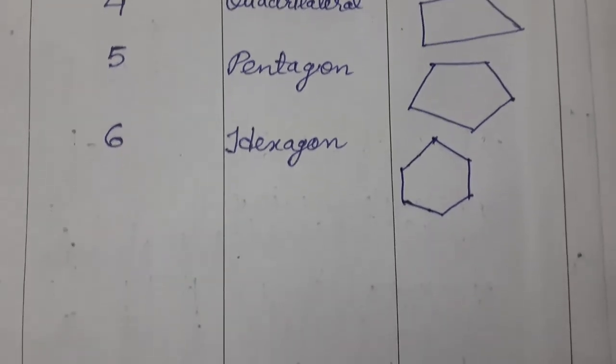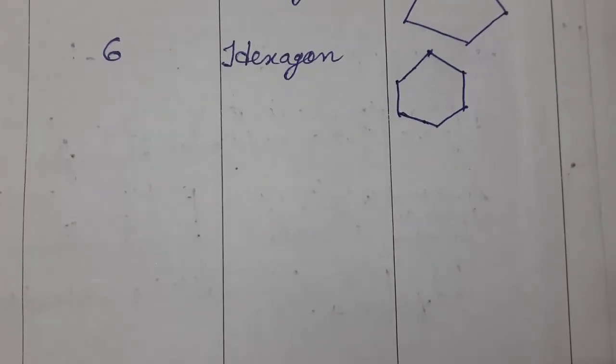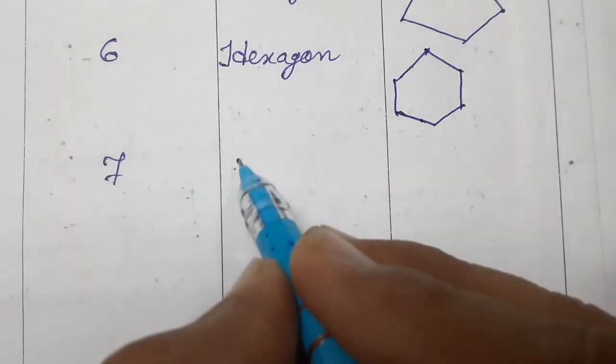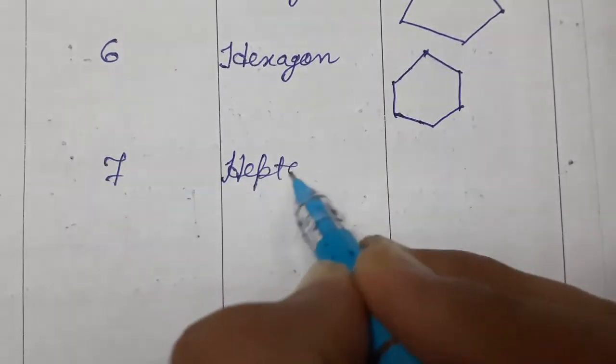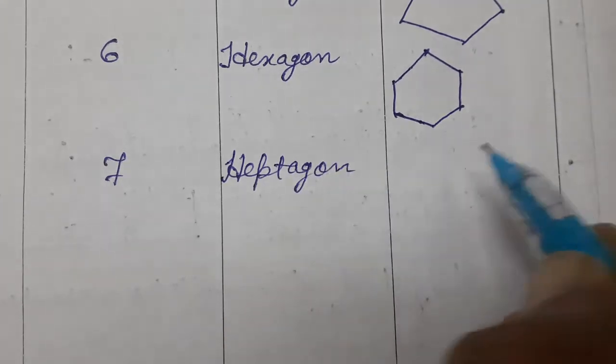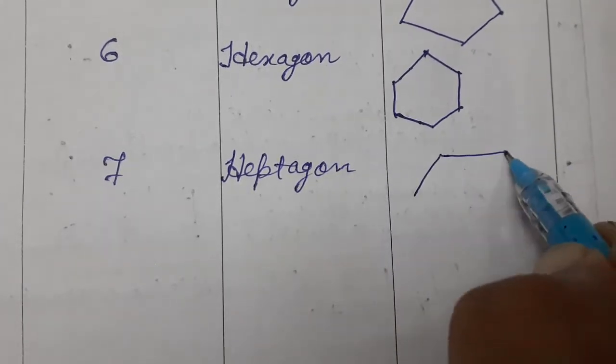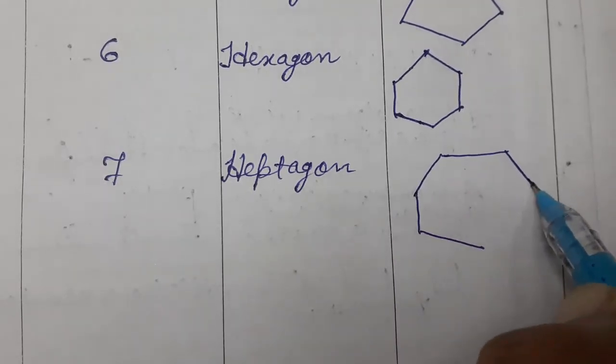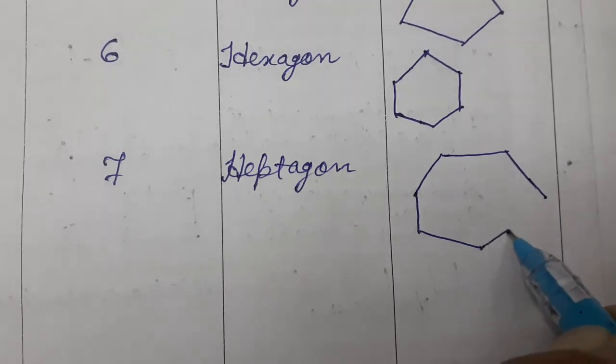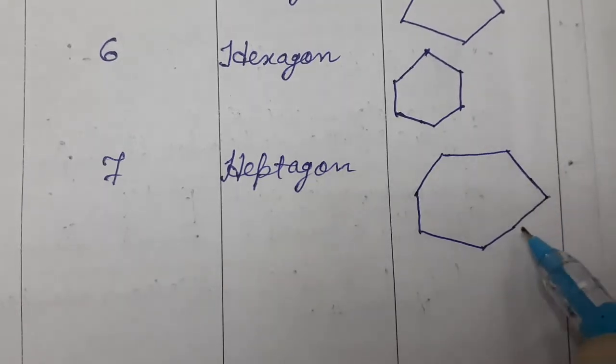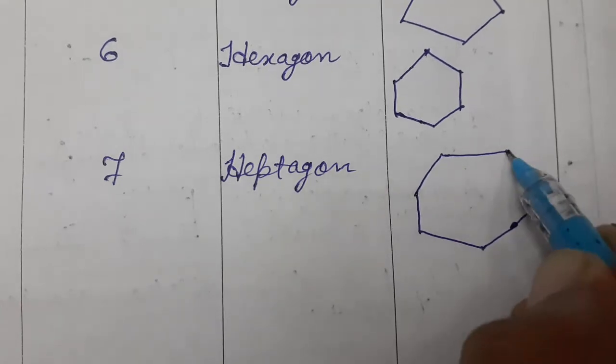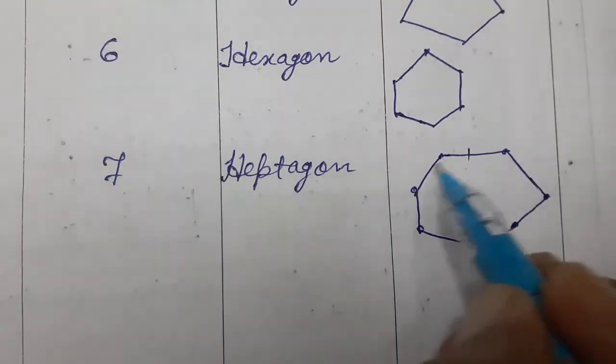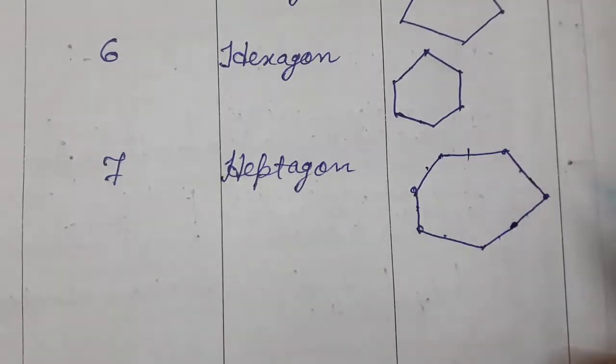Then comes 7 sides. If it contains 7 sides, then it is called heptagon or septagon. Any name we can call. 1, 2, 3, 4, 5, then 6 and 7. This contains 7 sides: 1, 2, 3, 4, 5, 6, 7 sides.